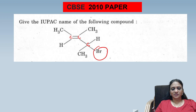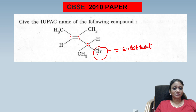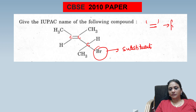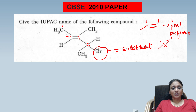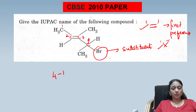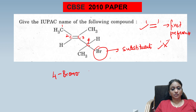Halogens are substituents, so you number the chain such that the double bond and the halogen get the lowest possible numbers. When you have both a halogen and a double bond, the double bond gets first preference and the halogen gets the next preference. Starting the numbering: positions 1 and 2 for the double bond, then 3 and 4. At position 4 you have bromo.